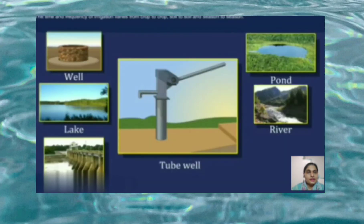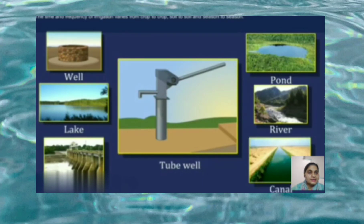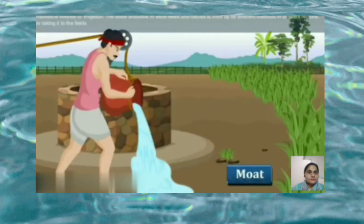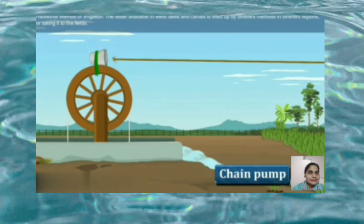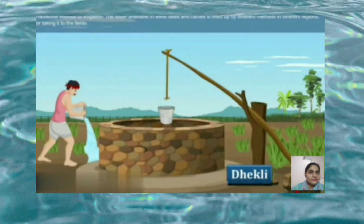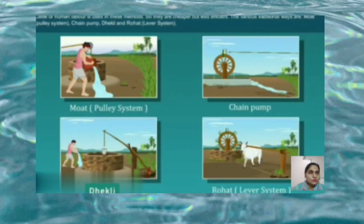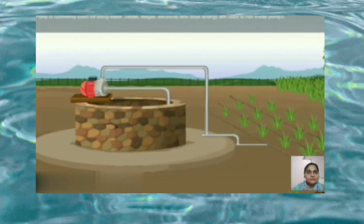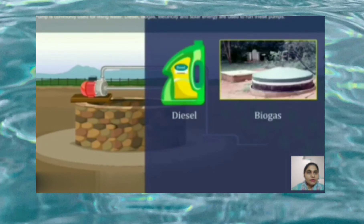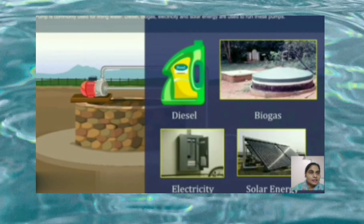The time and frequency of irrigation varies from crop to crop, soil to soil, and season to season. Sources of irrigation include wells, tube wells, ponds, lakes, rivers, dams, and canals. Water from these sources is conveyed to the fields by different methods. Cattle or human labor is used in some methods, so they are cheaper but less efficient. Various traditional ways include the moat, chain pump, dhekli, and rahat. Pumps are commonly used for lifting water; diesel, biogas, electricity, and solar energy are used to run these pumps.